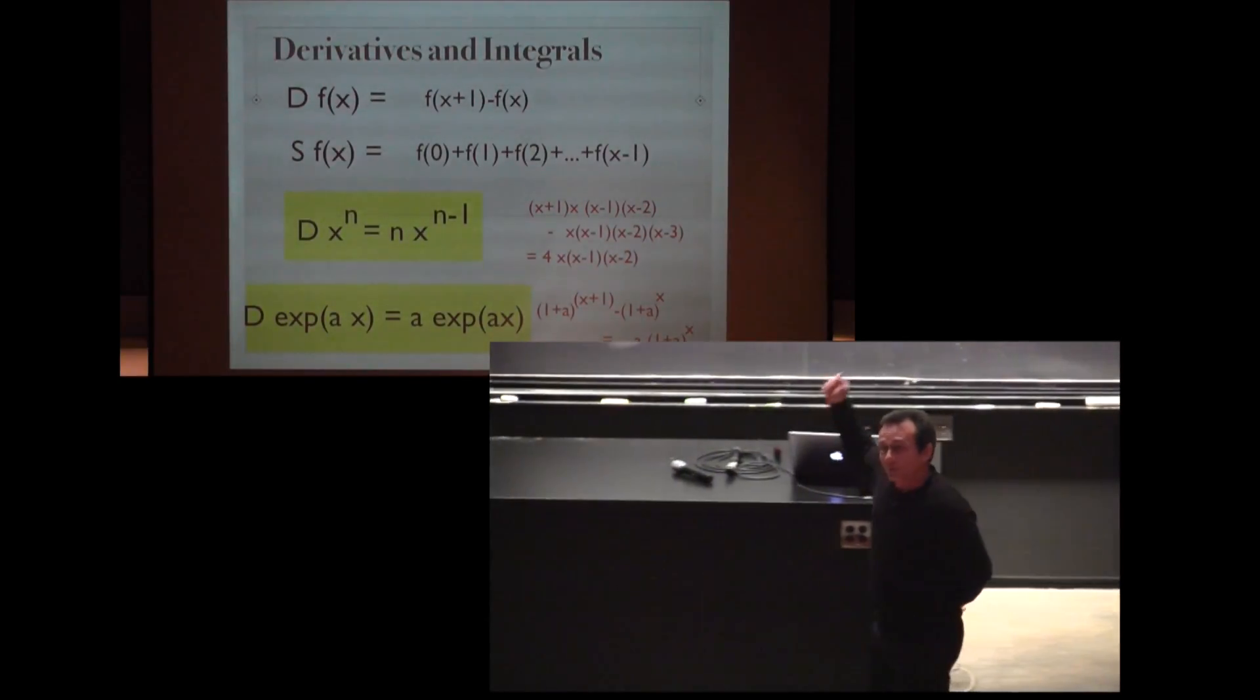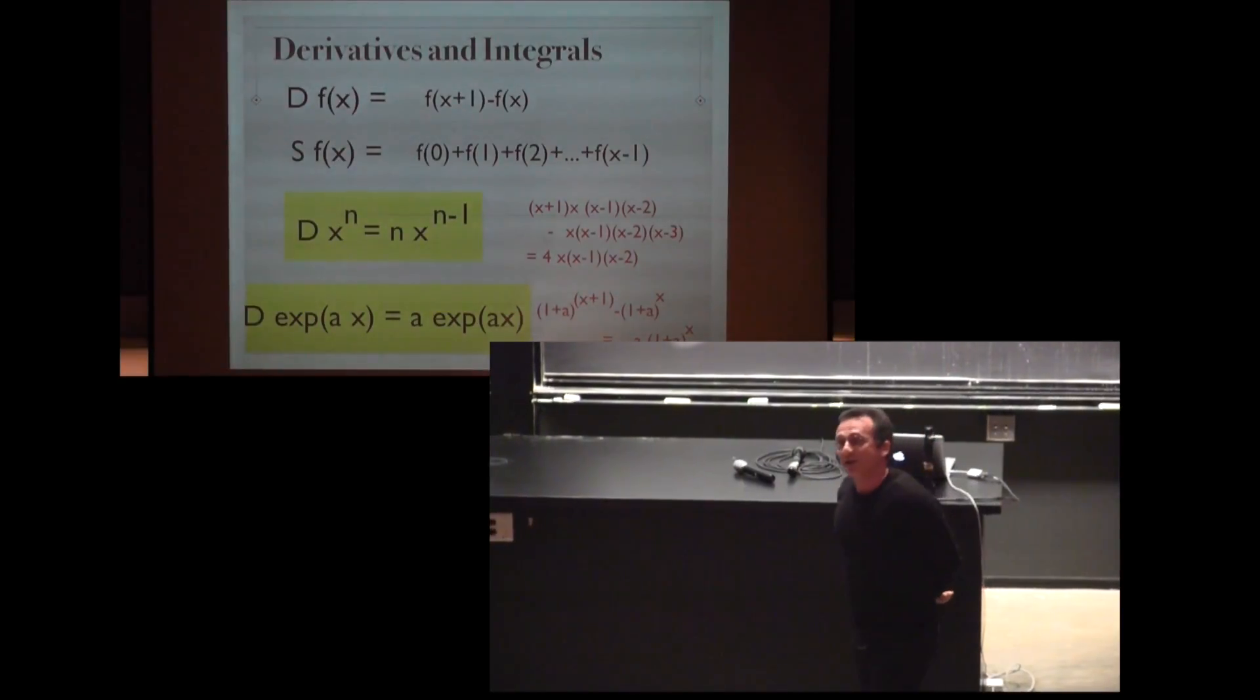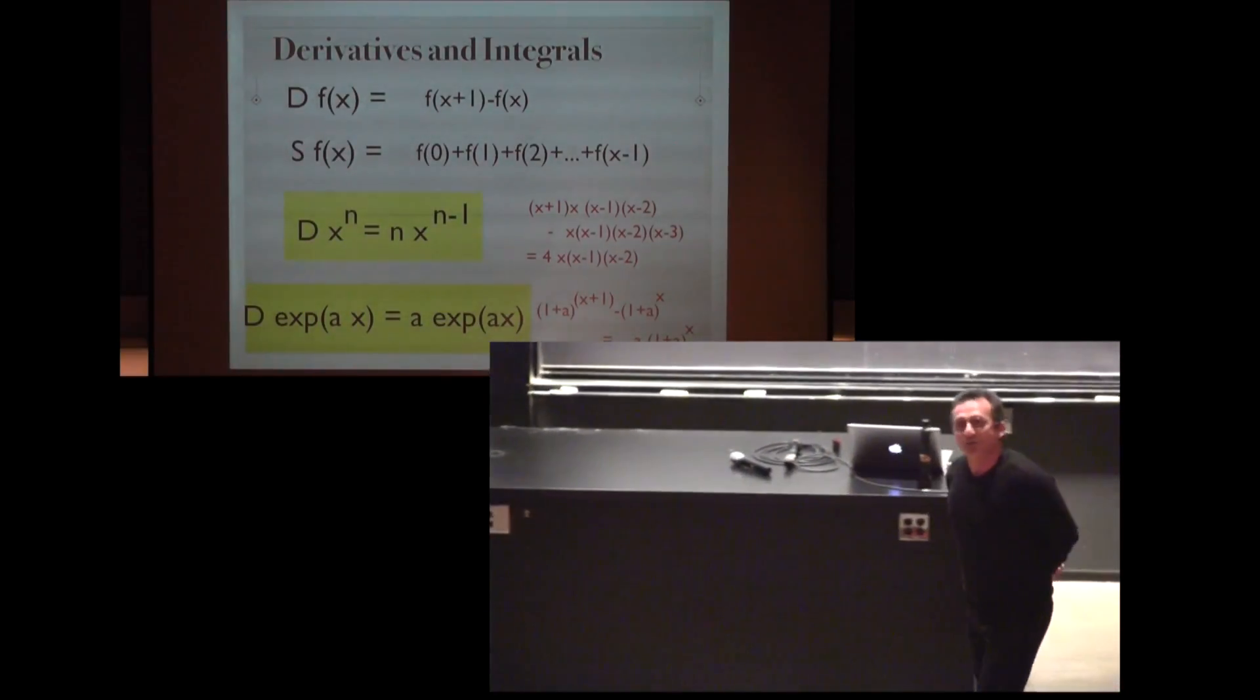This is a quantum deformation of the algebra we know, but it's done in such a way that the derivative of x to the n is n times x to the n minus 1, the formula we know.